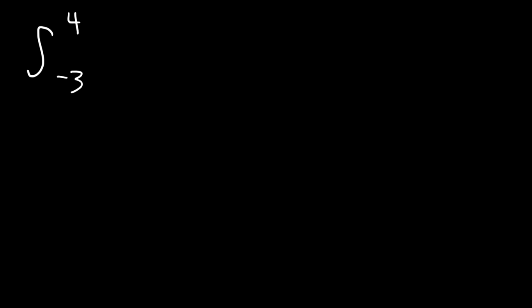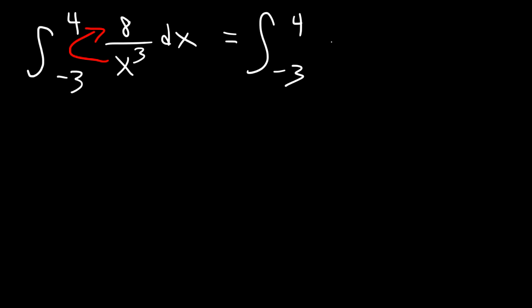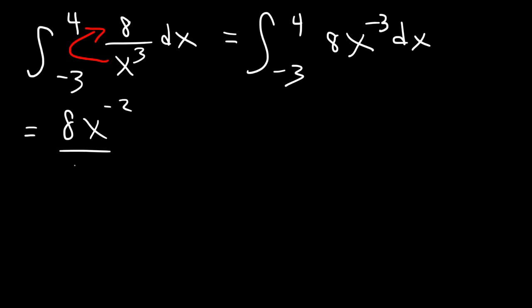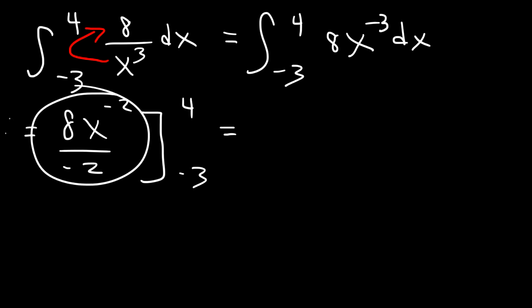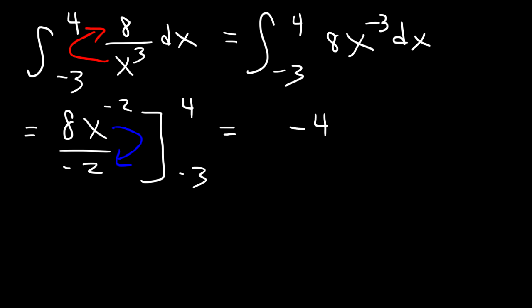Let's integrate this function from negative 3 to 4. First we need to rewrite the expression — move the x variable to the top before integrating. So we have 8x to the negative 3 dx. Using the power rule: negative 3 plus 1 is negative 2, and we divide by negative 2. Simplifying: 8 divided by negative 2 is negative 4. Moving x back to the bottom changes x to the negative 2 into x squared in the denominator: negative 4 over x squared.